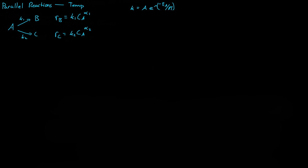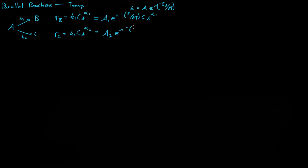So if we plug this into K1 and K2, what we get is RB is now equal to A1 times E to the power of negative E1 over RT, where E is the activation energy, times the concentration of A to the power of alpha 1. And the same is true for C, where we now have A2 times E to the power of negative E2 divided by RT, times the concentration of A to the power of alpha 2.